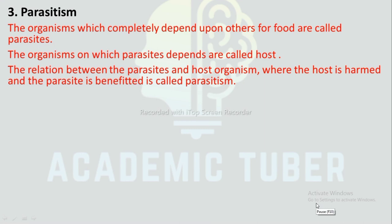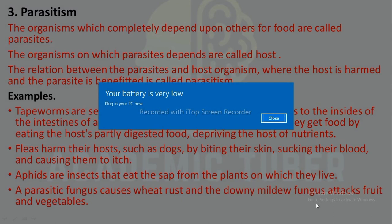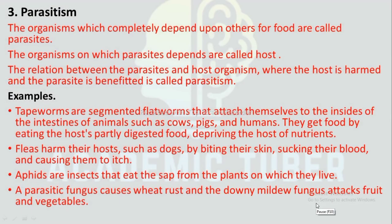Parasitism: Organisms which completely depend upon others for food are called parasites; the organisms on which parasites depend are called hosts. The relation where the host is harmed and the parasite is benefited is called parasitism. Examples: Tapeworms are segmented flatworms that attach to the inside of the intestine of animals such as cows, pigs, and humans, eating the host's partly digested food. Fleas harm their host by biting their skin and sucking blood. Aphid insects eat the sap from plants. A parasitic fungus causes wheat rust and downy mildew fungus attacks fruits and vegetables.